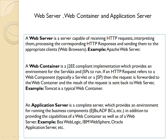A web container is a J2EE-compliant implementation which provides an environment for servlets and JSP to run. Tomcat is a typical web container — it holds the JSP engine and servlet engine to process JSP or servlet requests. An application server is basically the combination of a web container and a web server. Examples include BEA WebLogic, IBM WebSphere, and Oracle Application Server.